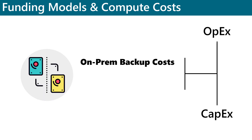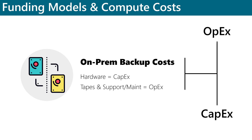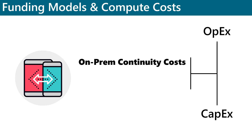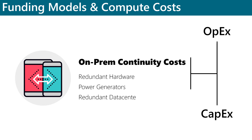Costs associated with backup and archive are often split between CAPEX and OPEX. The hardware costs associated with these solutions, typically the infrastructure needed to support them, usually fall under CAPEX. The consumables, like tapes and backup maintenance support, will typically fall under OPEX. Disaster recovery costs are usually considered CAPEX because they typically include redundant hardware, backup generators, and in some cases even redundant data centers. That said, the infrastructure and personnel costs are typically considered OPEX.